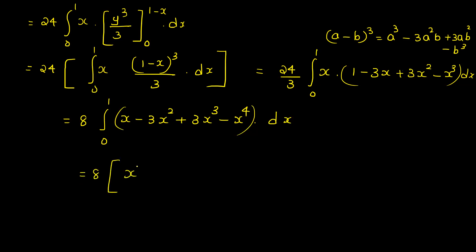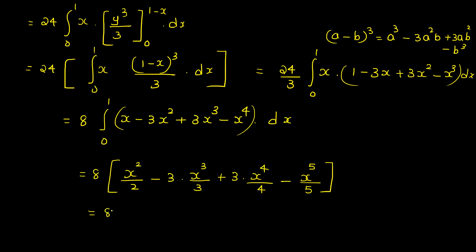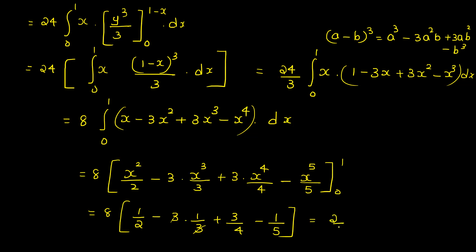That gives 8 times integral from 0 to 1 of x times (1 minus 3x plus 3x² minus x³) dx, which equals 8 times integral of (x minus 3x² plus 3x³ minus x⁴) dx. Integrating: 8 times (x²/2 minus 3x³/3 plus 3x⁴/4 minus x⁵/5) from 0 to 1, equals 8 times (1/2 minus 1 plus 3/4 minus 1/5), giving ȳ equals 2/5.